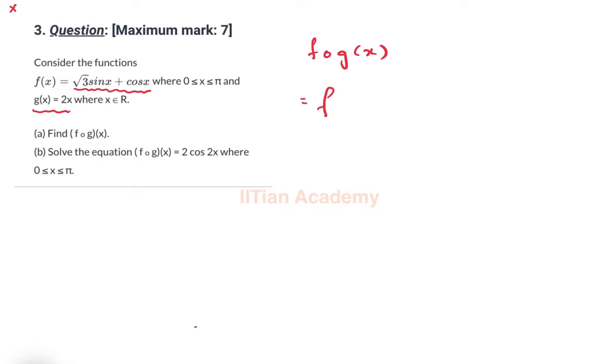So what do we mean by f(g(x))? f(g(x)) means f of g(x). We have to see what is g(x). g(x) is 2x, so f(2x).